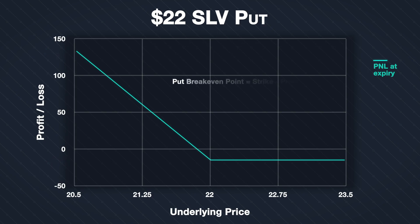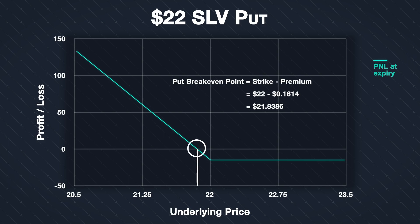In lecture 5.4 we gave the formula for the breakeven point of a put option as: breakeven point equals strike price minus premium paid. As with the profit calculations, instead of using just the premium paid, we will use the total cost including fees, which is $0.1614 per share. The breakeven point is then calculated as $22 minus $0.1614, which equals $21.8386, or roughly $21.84. This is the point at which the profit or loss line crosses the x-axis.